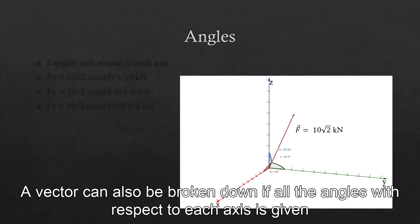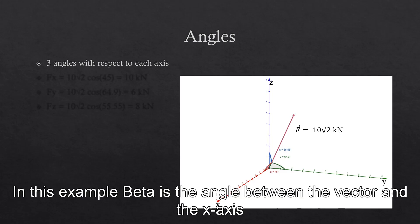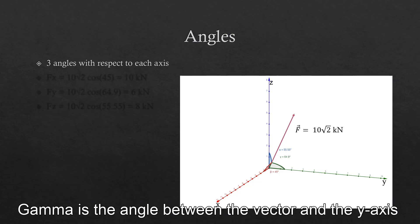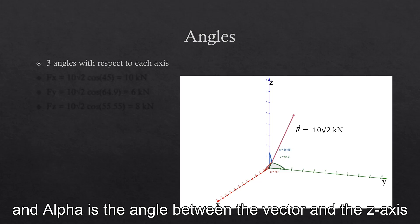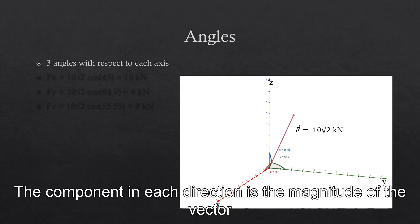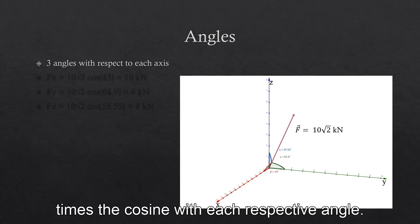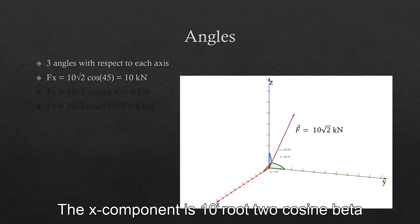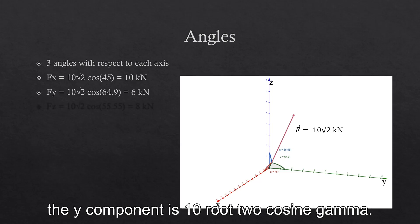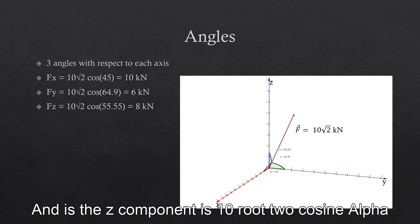A vector can also be broken down if all the angles with respect to each axis are given. In this example, beta is the angle between the vector and the x-axis, gamma is the angle between the vector and the y-axis, and alpha is the angle between the vector and the z-axis. The component in each direction is the magnitude of the vector times the cosine of each respective angle. The x-component is 10√2 · cos(beta), the y-component is 10√2 · cos(gamma), and the z-component is 10√2 · cos(alpha).